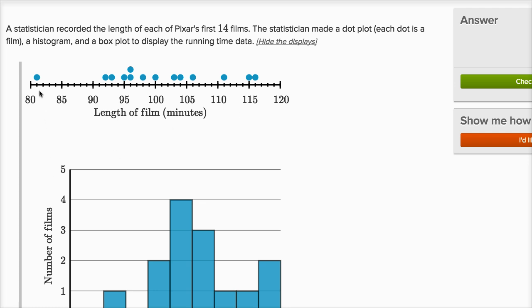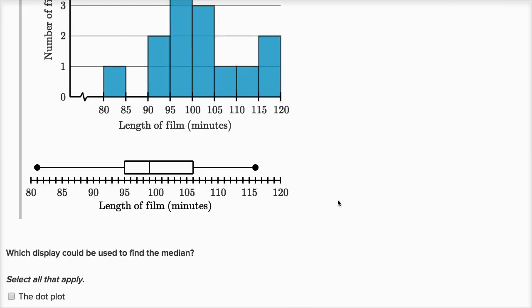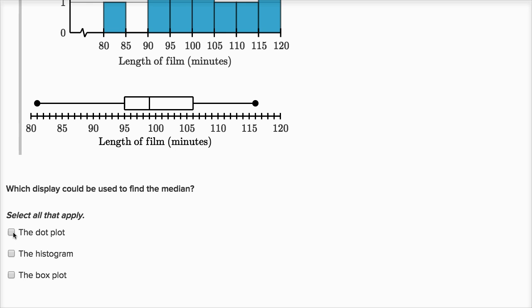I could literally make a list. I could write down 81, and then write down 92, then write down 93, then write down 95, then I could write down 96 twice, and then I could write down 98, then I could write down 100. I think you see where this is going. I could write out the entire list and then I could find the middle value. So the dot plot, I could definitely use to find the median.